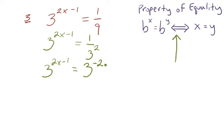Now we see that we have indeed a perfect problem to use the property of equality in exponents. We have like bases of 3, and since those bases are alike, we know that the exponents, 2x minus 1 and negative 2, must be equal.